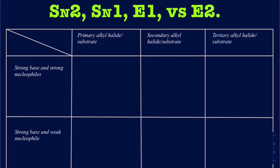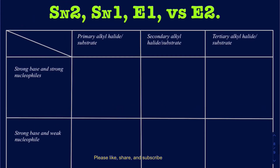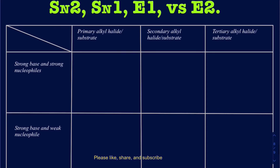Hello, everyone. In this lecture, I'm going to be summarizing all four different types of mechanisms when we're comparing SN1, SN2, E1, and E2 — how do you know when a particular reaction will do which one? I'm going to be comparing those on the basis of your types of alkyl halides and on the basis of what type of base and nucleophile you're going to be using. On the columns I have the types of alkyl halides, and on the rows I have different types of nucleophiles and bases.